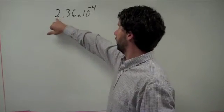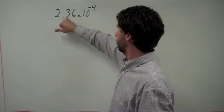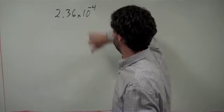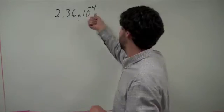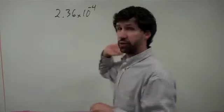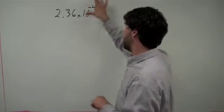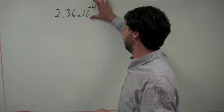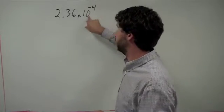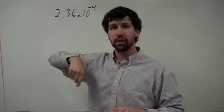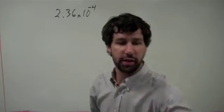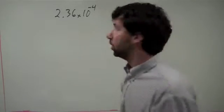We have a digit, decimal, rest of our digits, then a power of 10. It happens to be a negative exponent. Now what you should start getting used to is that that means it's a small number. It's something that's divided by 10 four times.